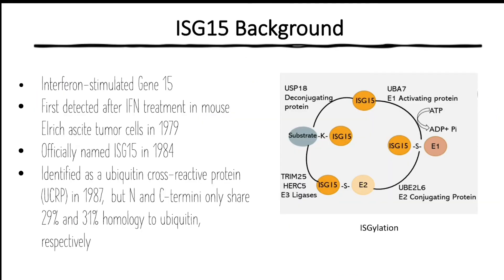ISG15 stands for interferon-stimulated gene 15. It was first detected after interferon treatment in mouse L-rich assay cells in 1979, and it was identified as a ubiquitin cross-reactive protein with its N and C termini only sharing 29 and 30 percent homology to ubiquitin respectively. The ISGylation system functions similarly to the ubiquitin proteasome degradation system with three enzymes: an activating enzyme, a conjugating enzyme, and a ligase.